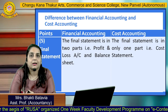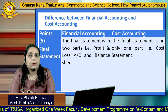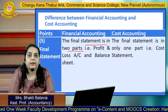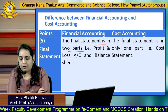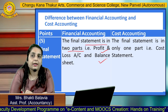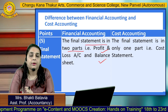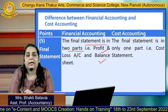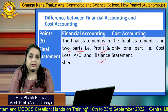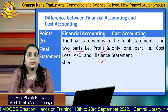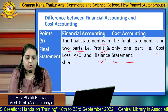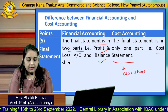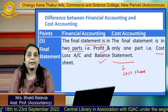Another point of comparison is the final statement. In Financial Accounting, the final report is divided into two parts: the Profit and Loss Account and the Balance Sheet — which you have been learning since 11th standard. But in Cost Accounting, there is only one output: the Cost Statement, also called the Cost Sheet. We will learn how to prepare a cost sheet in the upcoming classes.